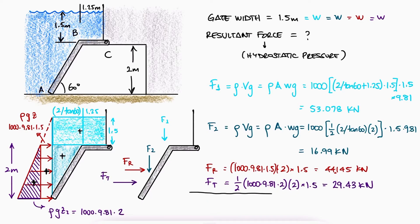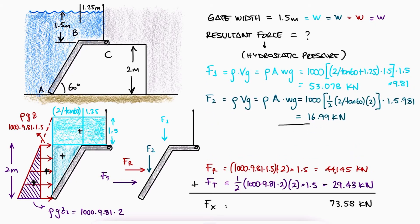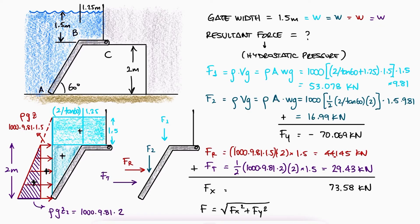The total horizontal force is therefore 73.58 kN and the total vertical force is 70.1 kN and with these two components, we find the overall resultant force. Notice that in this case the location of the forces doesn't matter.